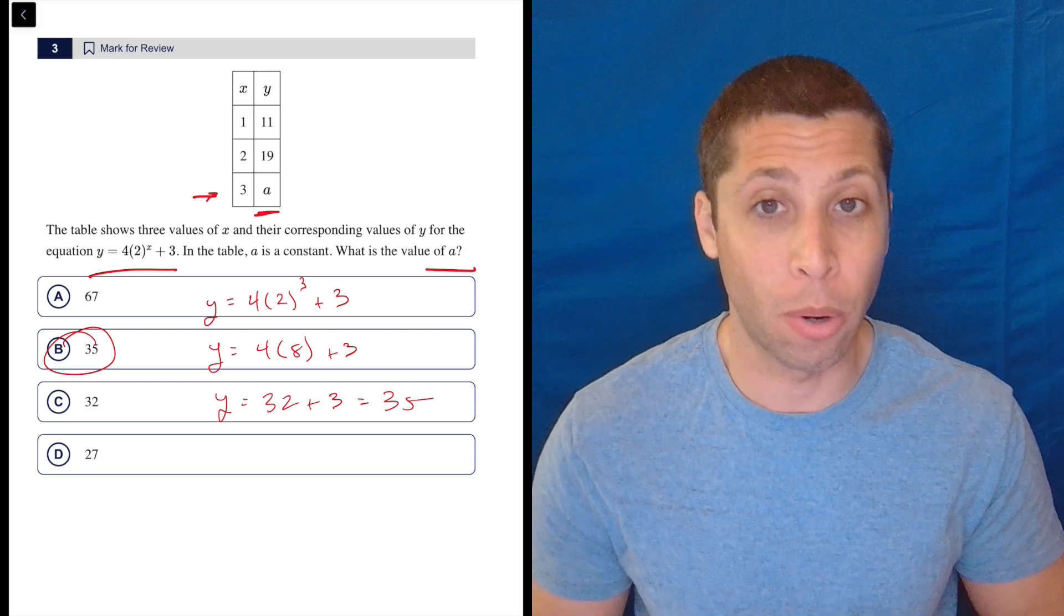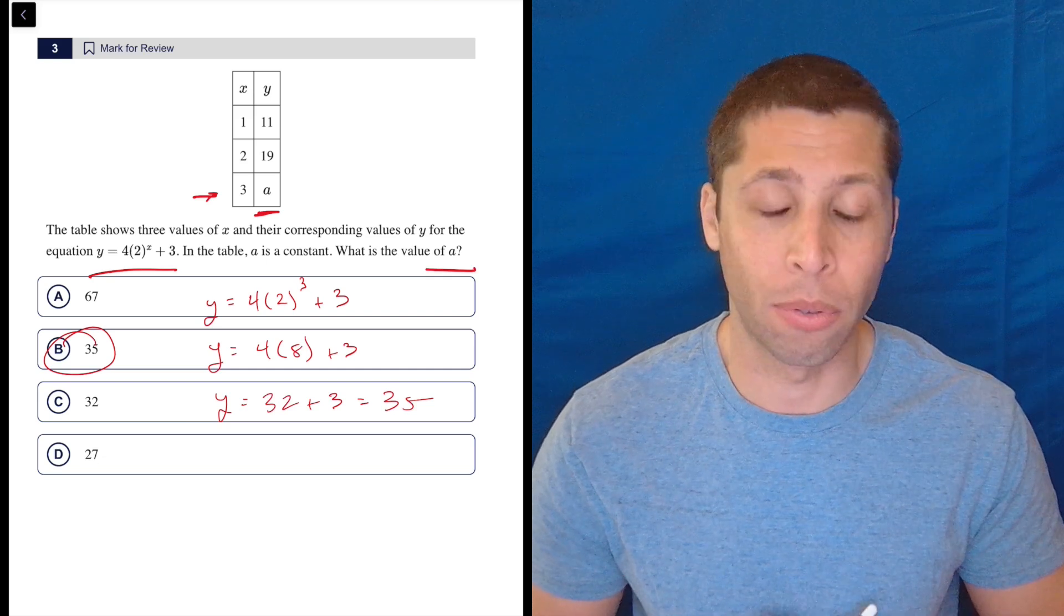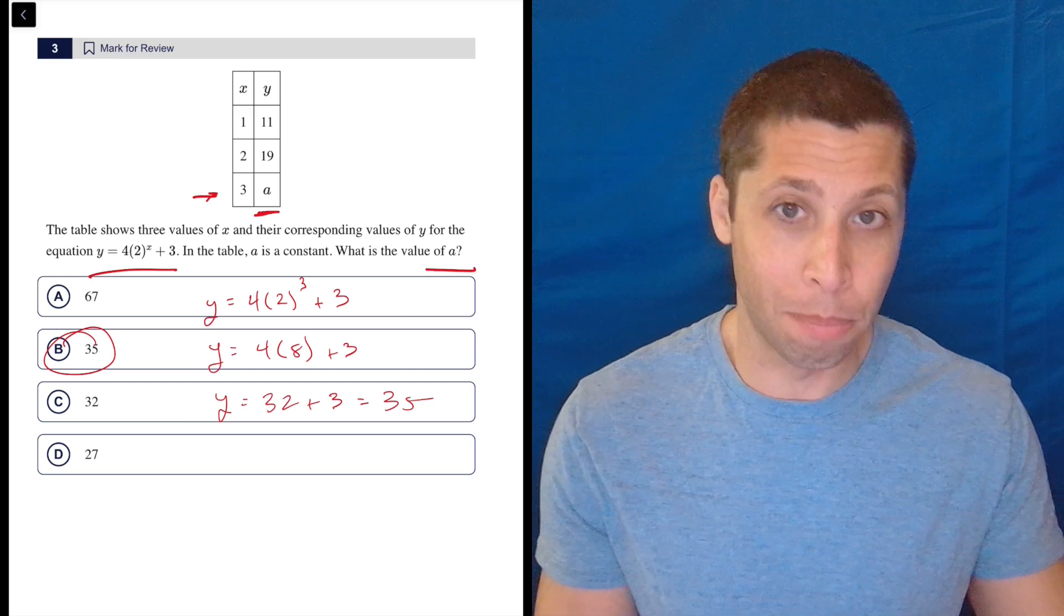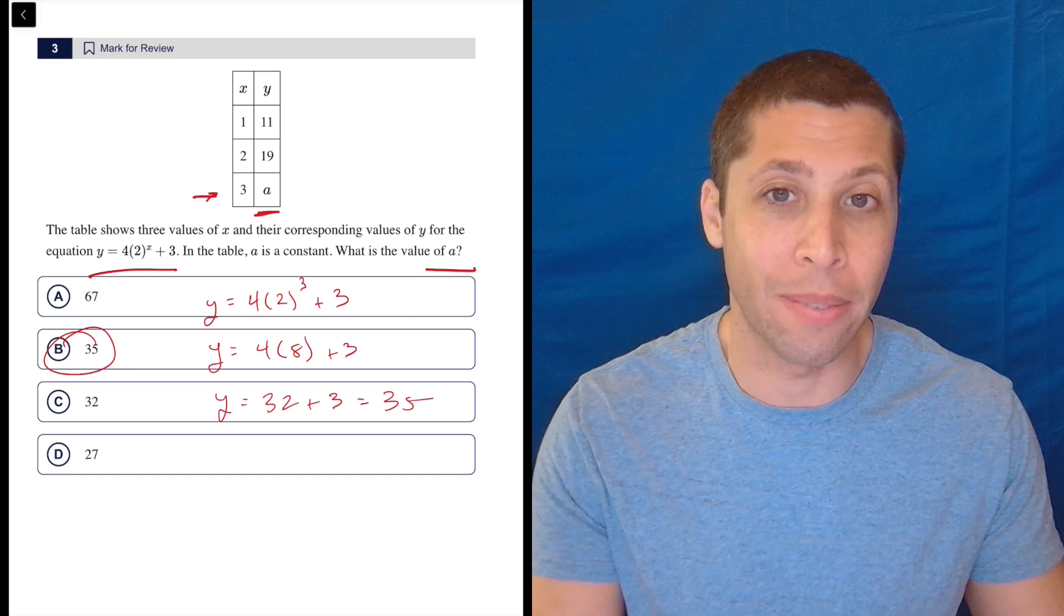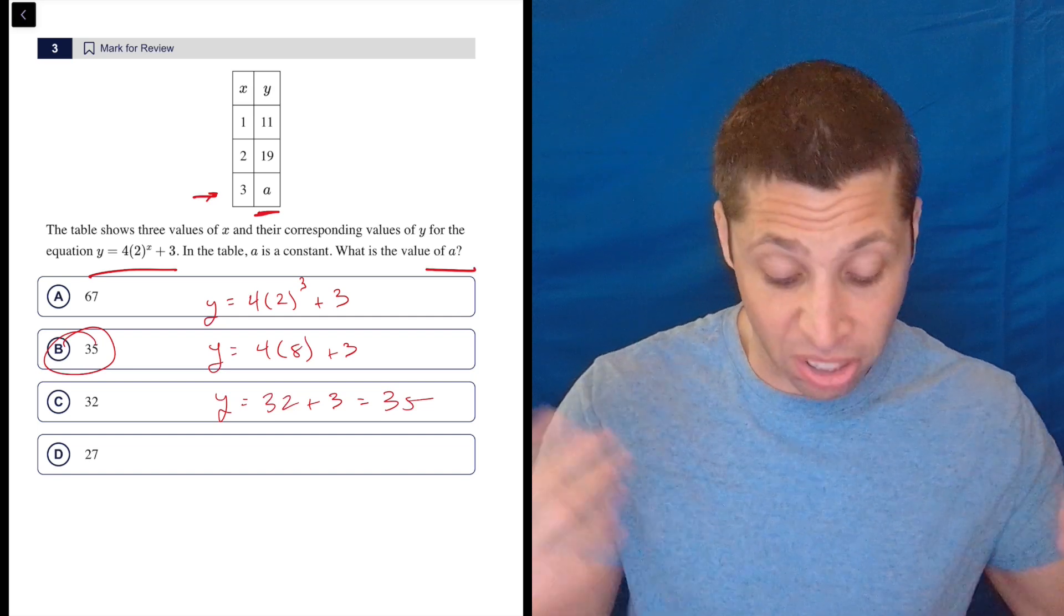like y equals mx plus b or one of the quadratic formulas, equations. Those are pretty standard that we need to be able to produce on our own without being given the equation all the time. But this is just kind of a random exponential.